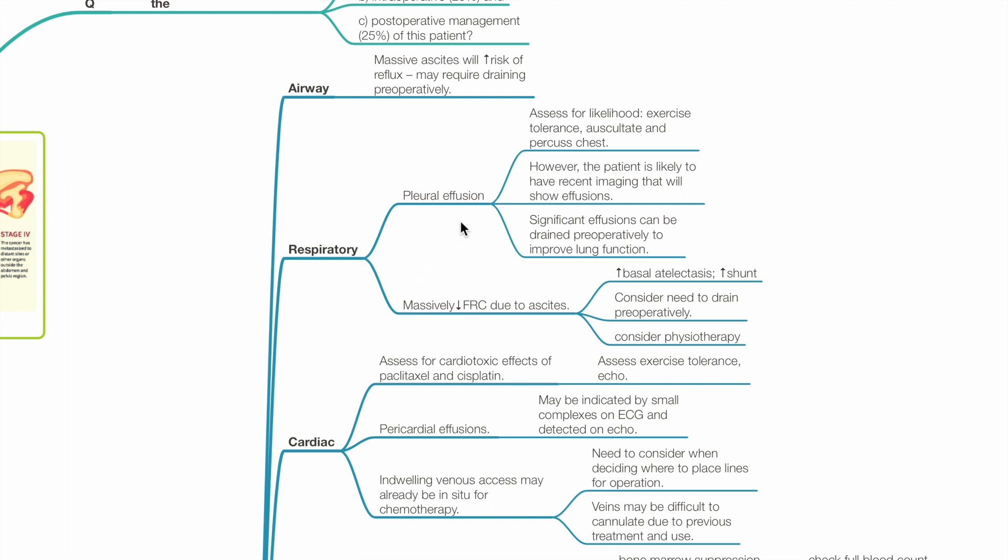B for breathing. Pleural effusion. Assess the likelihood of pleural effusion with exercise tolerance, auscultation, percussion and imaging. Significant effusions require drainage prior to operation. Ascites massively reduces FRC, which increases basal atelectasis, shunt, VQ mismatch and hypoxia.